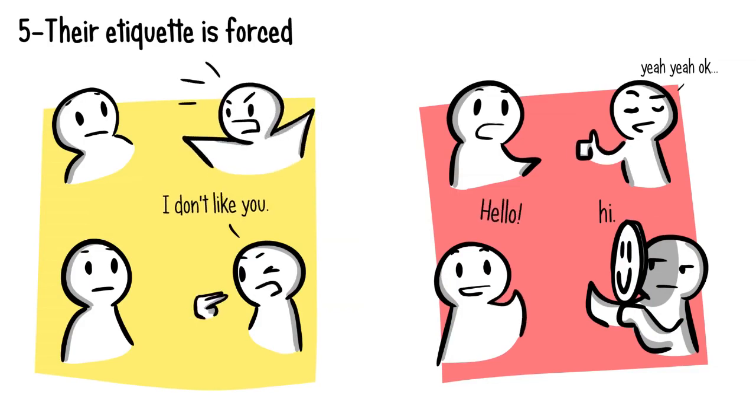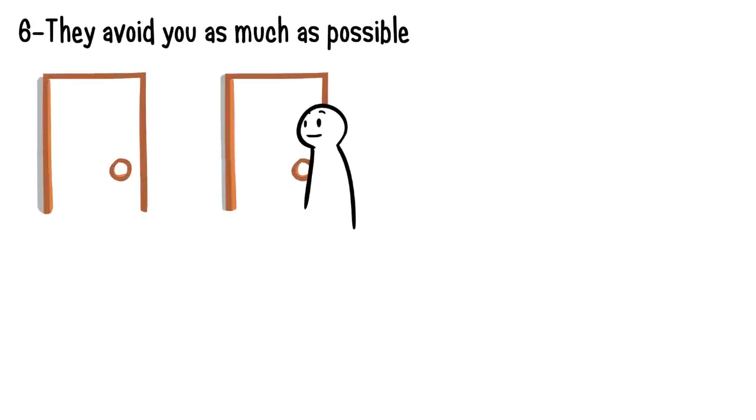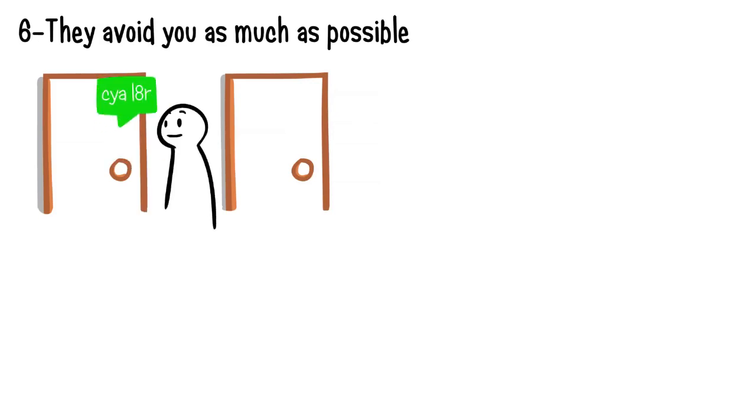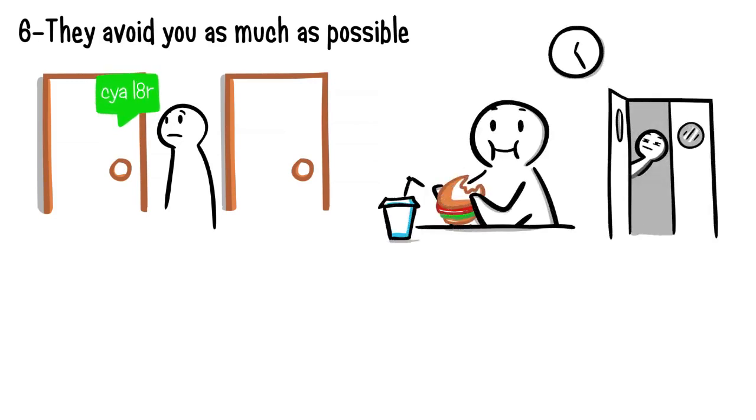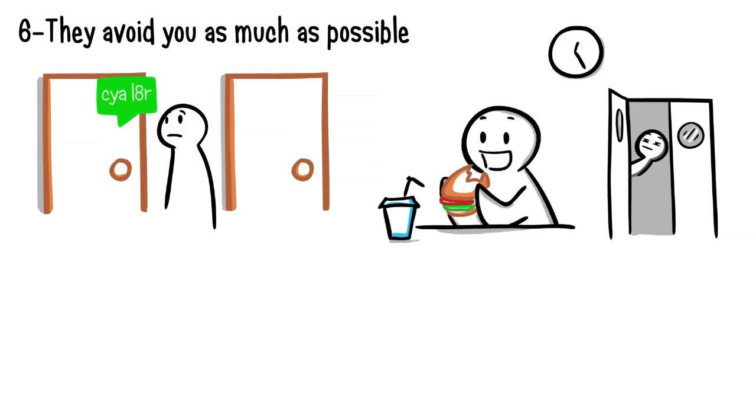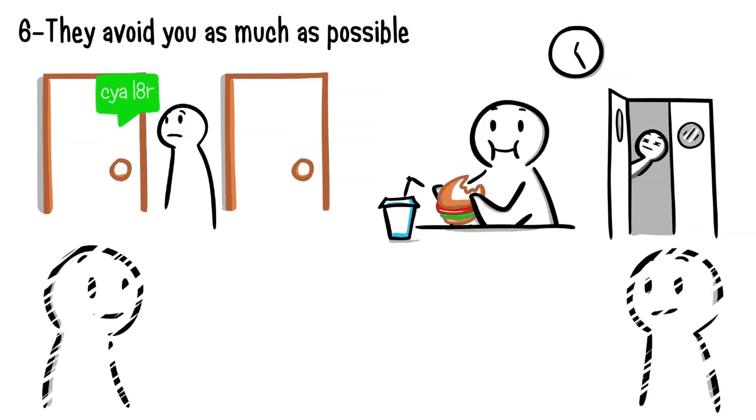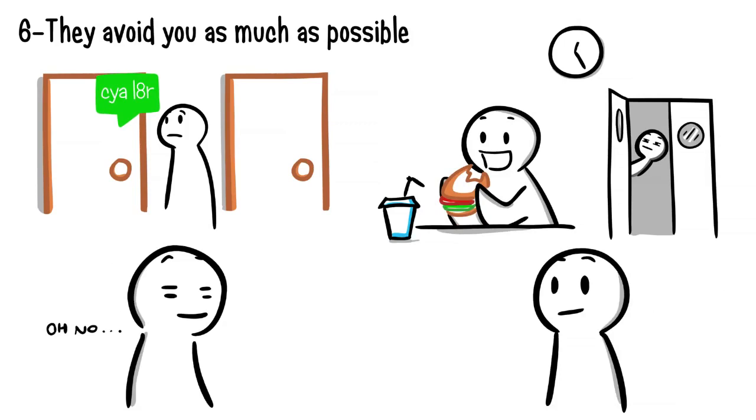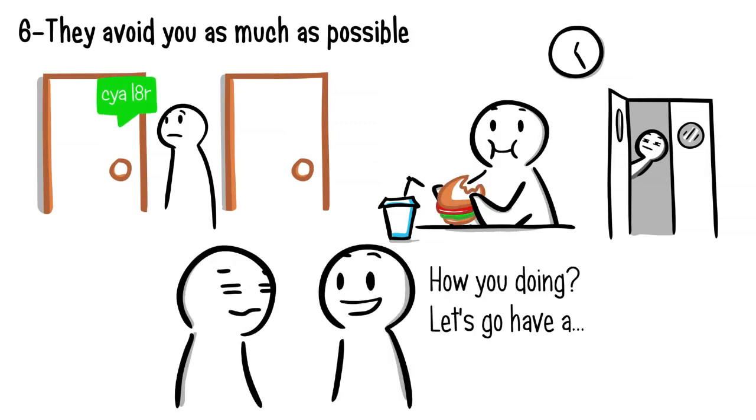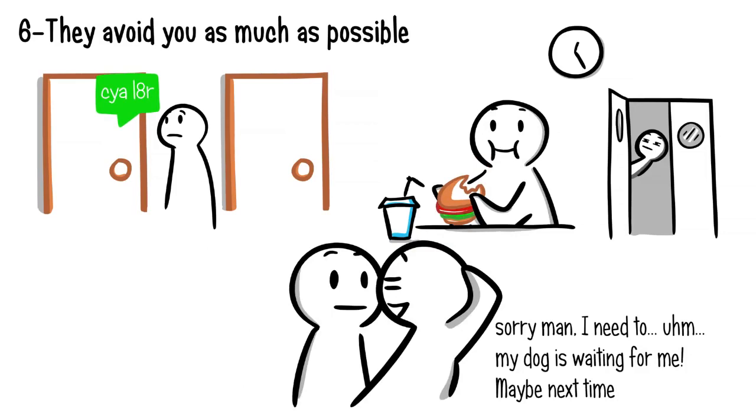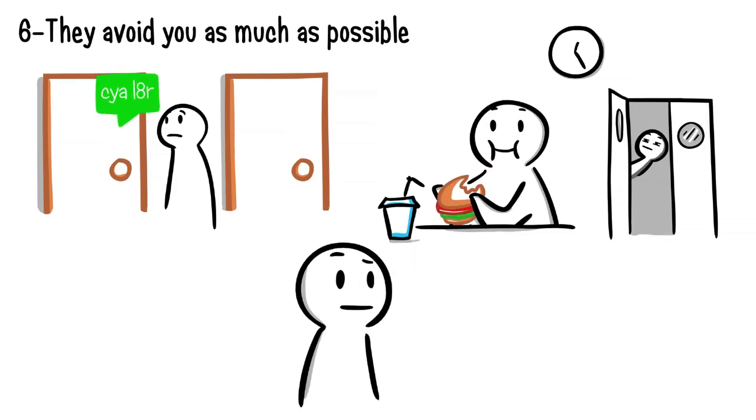Number six: they avoid you as much as possible. Do they live or work in close proximity to you but limit communication to emails or text messages? When someone secretly dislikes you, they will do whatever it takes to have minimum contact with you. It's especially a sign if they find out your schedule just to avoid you during your lunch hours or time you need to occupy the same space. And when you do end up bumping into one another, they'll always have an excuse ready at hand to avoid seeing you again.